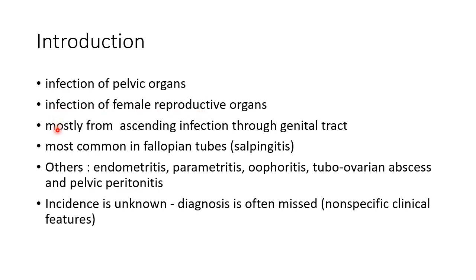PID results mostly from ascending infection through the genital tract. The most common form of PID is Salpingitis, i.e. infection of fallopian tubes. Other forms include Endometritis, Parametritis, Oophoritis or infection of the ovary, Tubo-Ovarian abscess, and Pelvic Peritonitis.